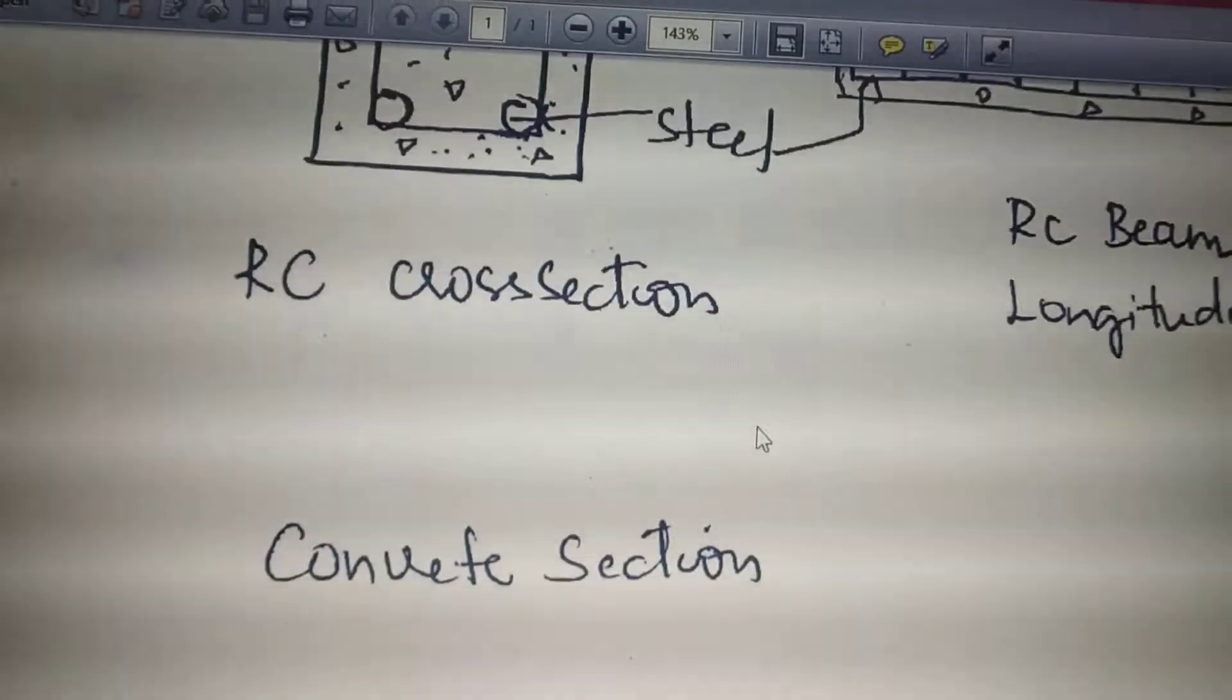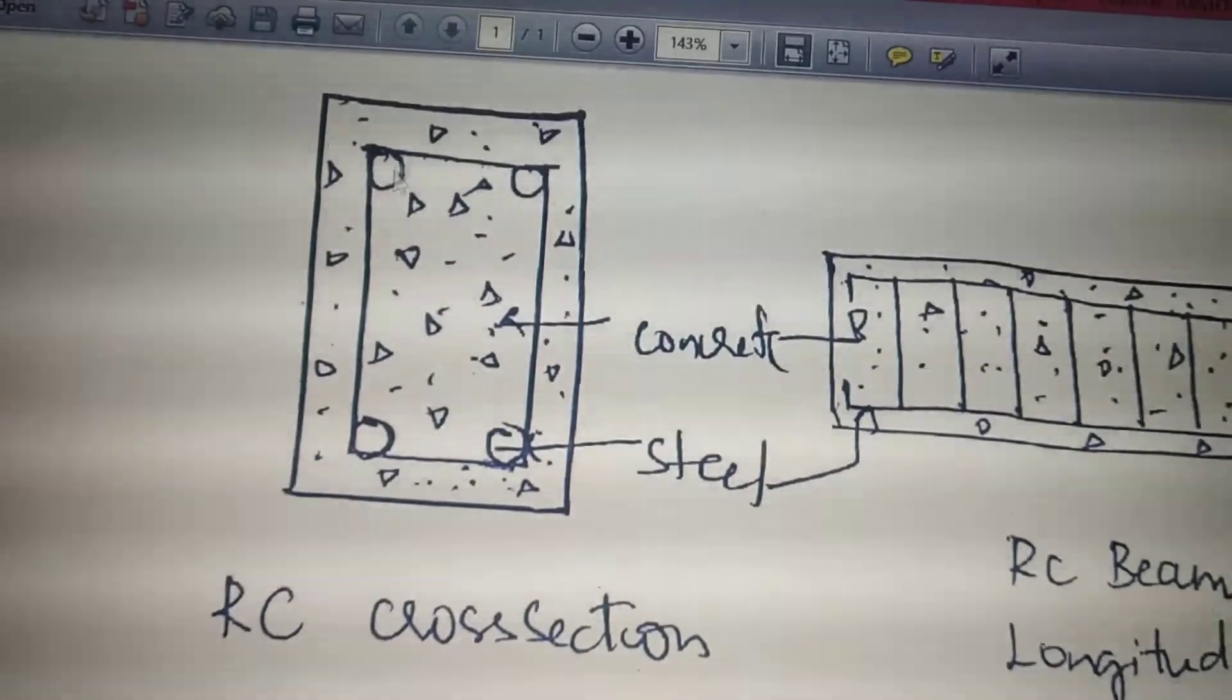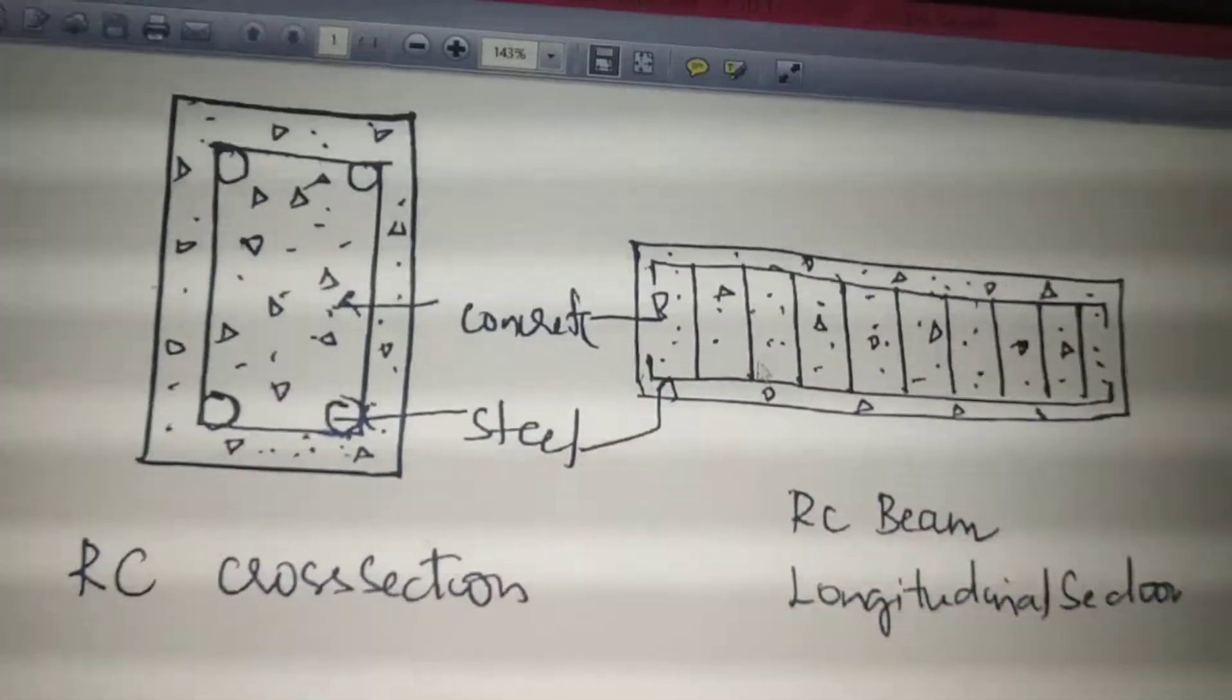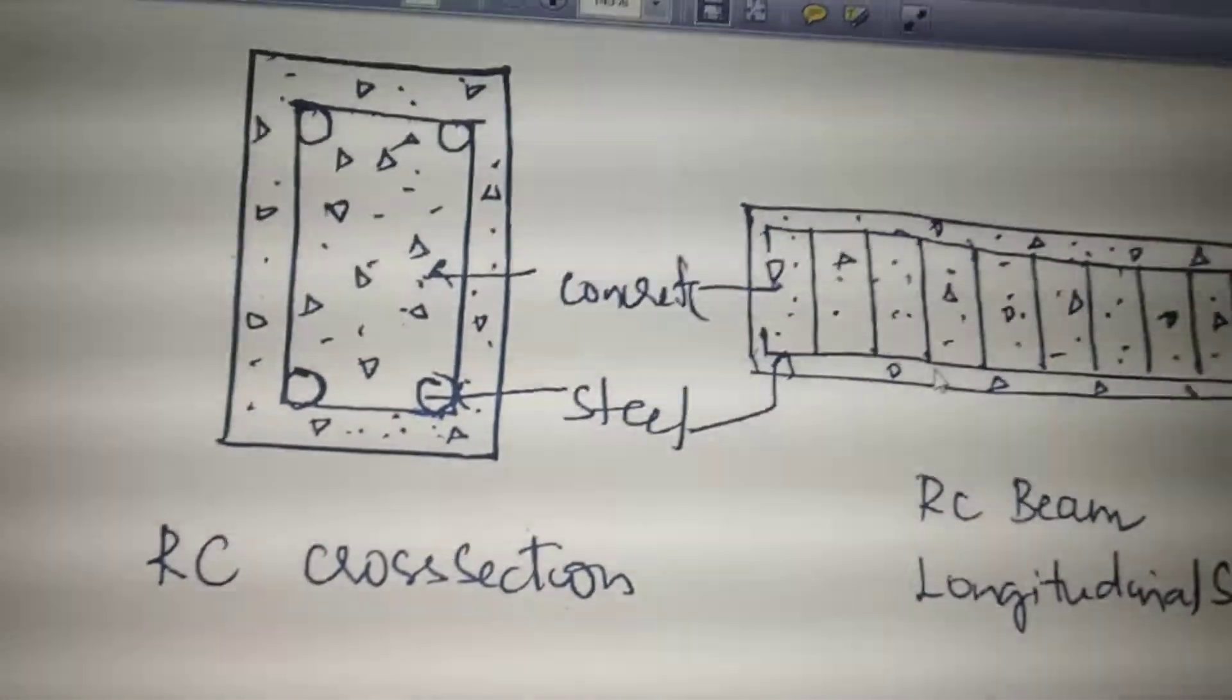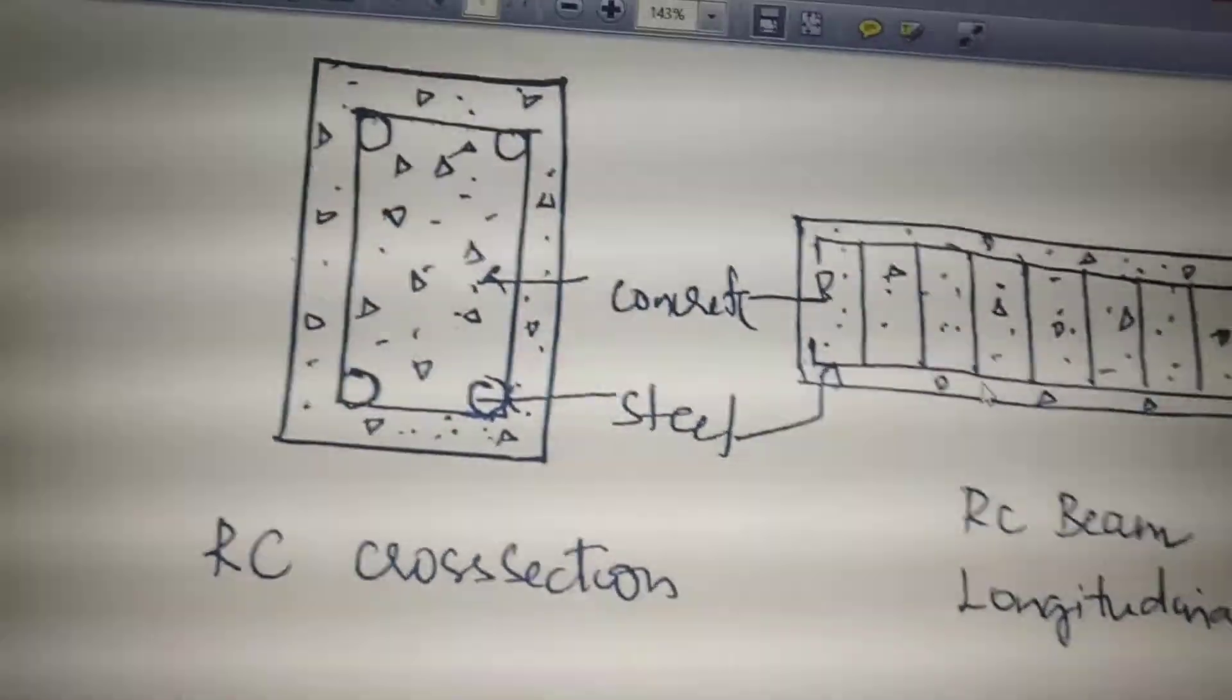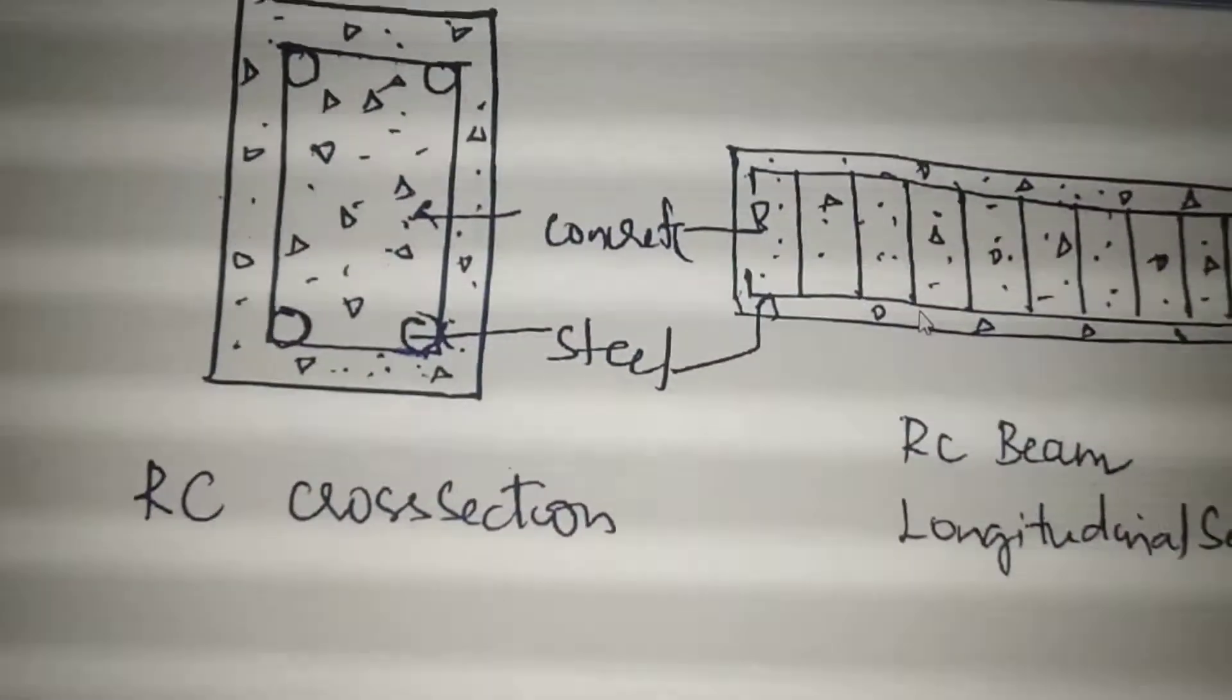This concept refers to reinforced concrete section. Here you can see the example - I have drawn a cross section showing the concrete as well as the steel members. This is your steel member and this is the longitudinal section RC beam. The weak characteristics of the concrete - brittle nature or weak in tension - was improved by providing steel bars in its tension zones as well as compression zone.